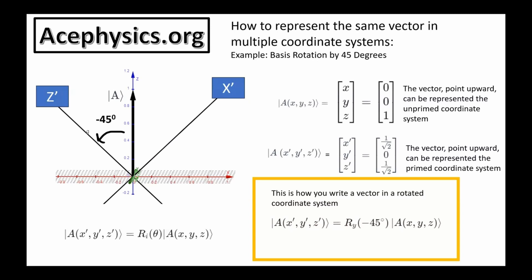It's the same vector A — it still points upward. But in the prime coordinate system, it is some amount in the x-prime direction and some amount in the z-prime direction. In the prime coordinate system, the vector A is represented as 1 over root 2, 0, 1 over root 2. When you multiply the vector by some rotation matrix, that expresses the vector in a new coordinate system — it's the same vector, just expressed in a different rotated coordinate system.